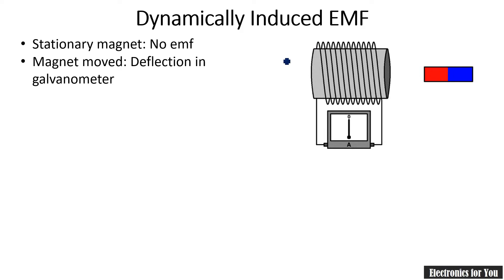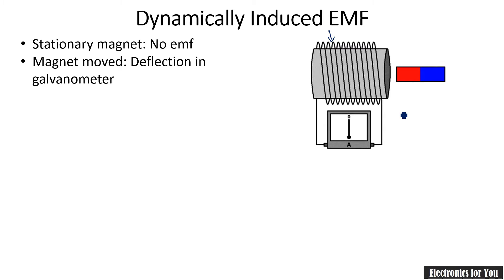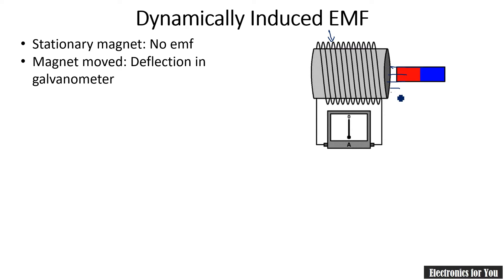Here is the experimental setup for induced EMF. You can see a coil of wire — or simply a wire — which is directly connected to a galvanometer. If we have a bar magnet and keep moving it, there will be a change in magnetic flux, and due to this change the EMF is induced. This is Faraday's Law of Electromagnetic Induction.